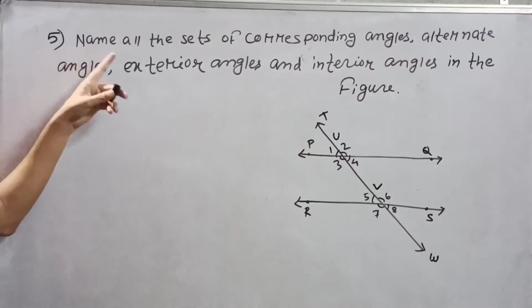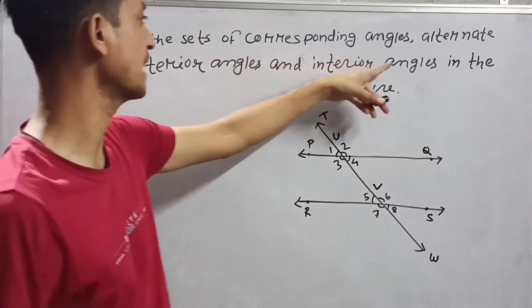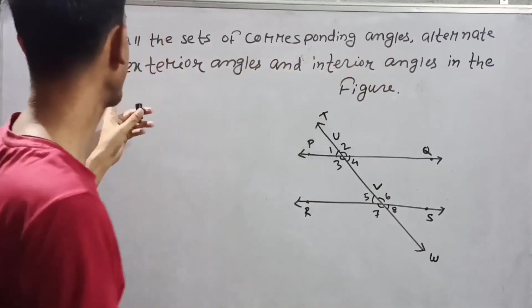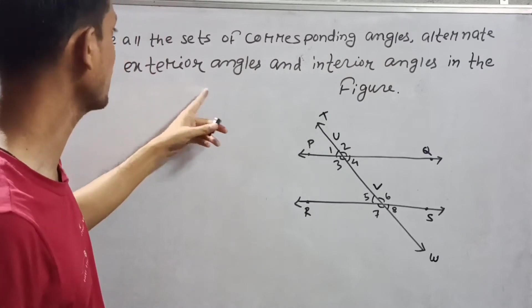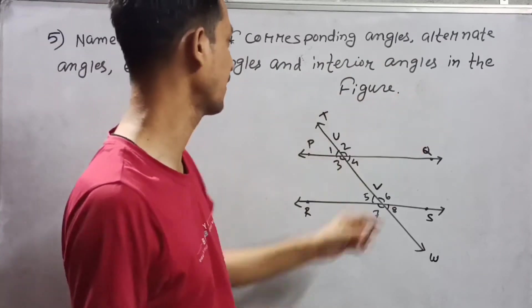Number 5: Name all the sets of corresponding angles, alternate angles, exterior angles, and interior angles in the figure.